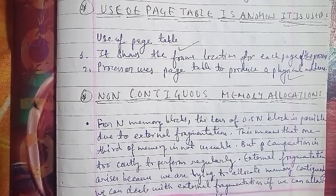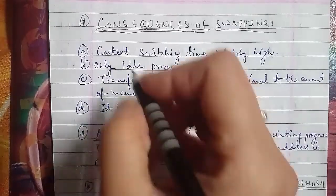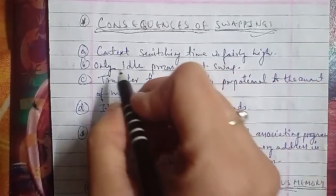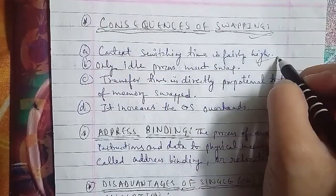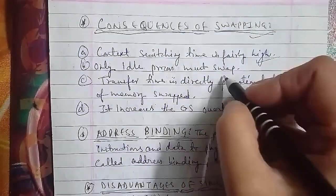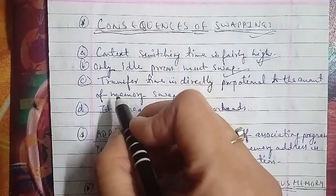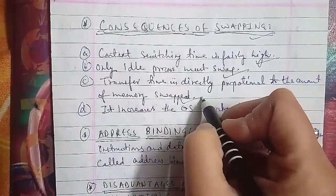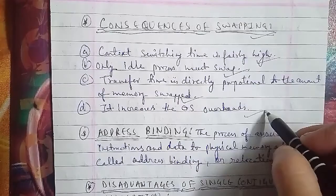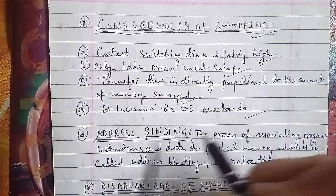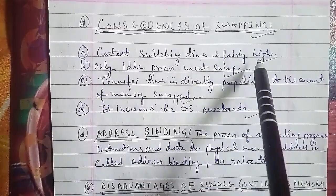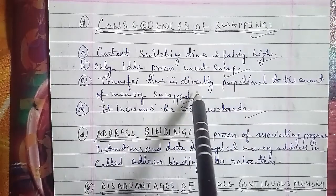Consequences of swapping: there are four consequences. First, context switching time is fairly high. Second, only idle processes must swap. Third, transfer time is directly proportional to the amount of memory swapped. Fourth, it increases the operating system overhead. If asked about consequences of swapping, write these four points.